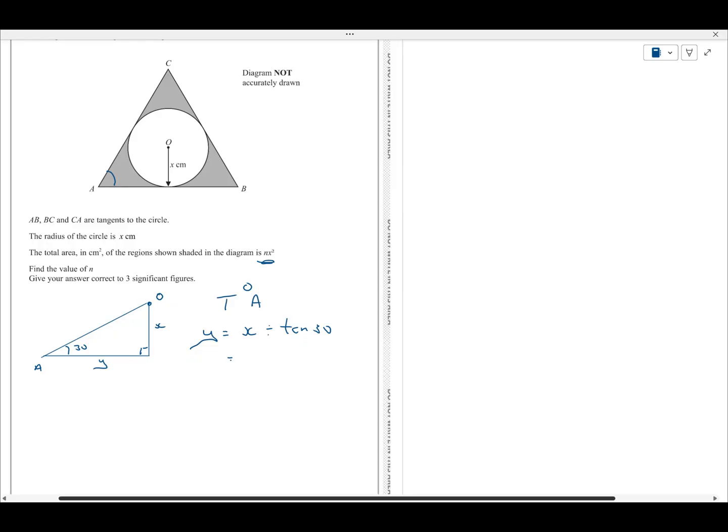So, get my calculator out. Tan 30 equals, so that's going to be x divided by root 3 over 3. So, that's going to be 3x over root 3, which means that the whole of that is 6x divided by root 3. Okay, good.